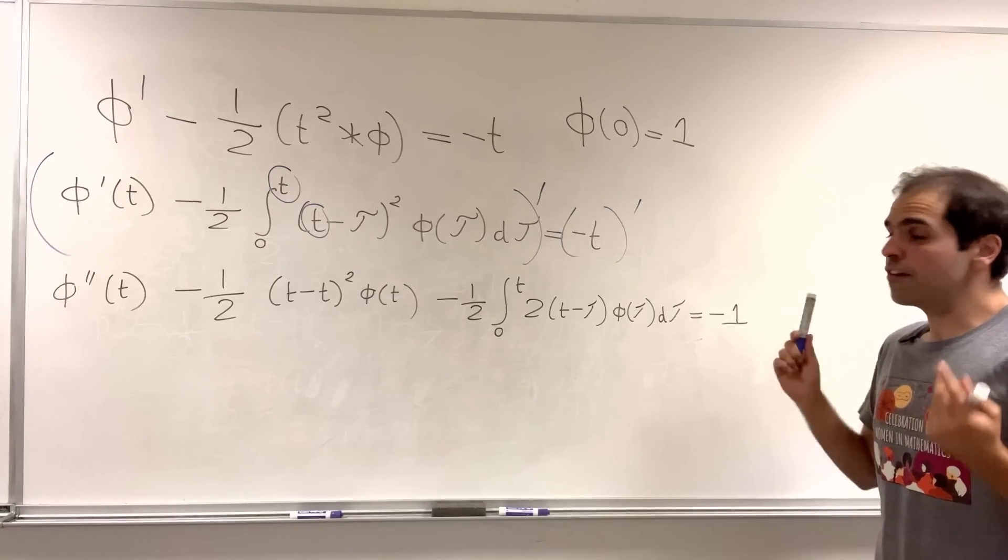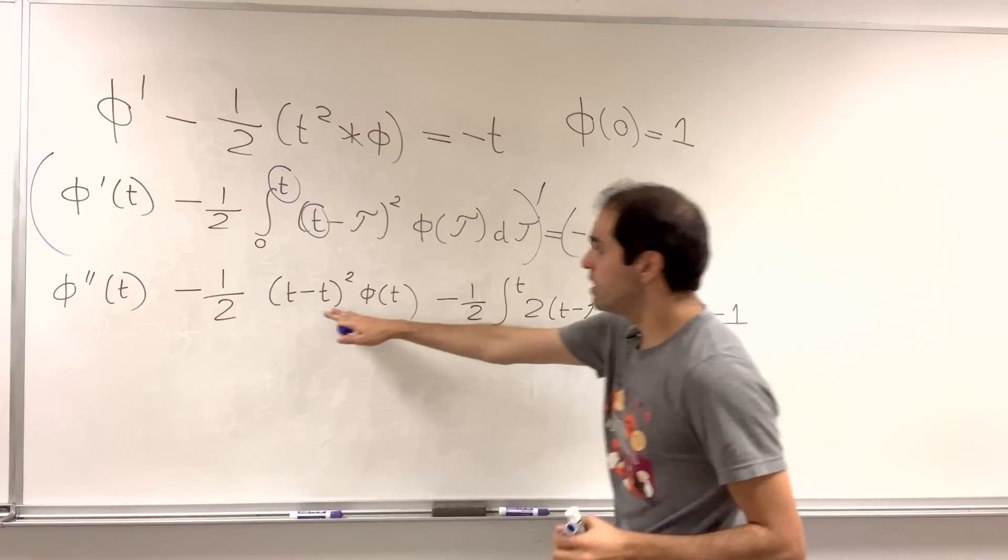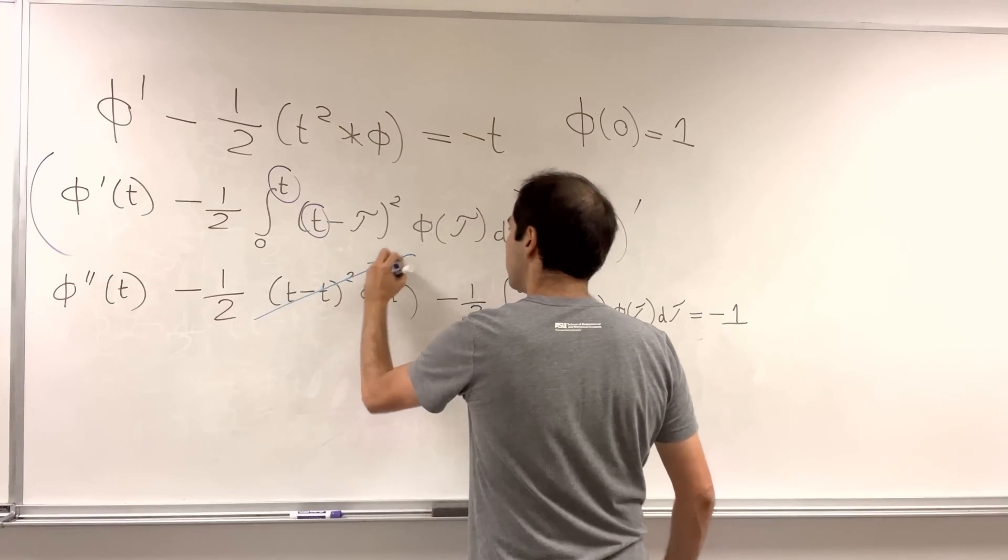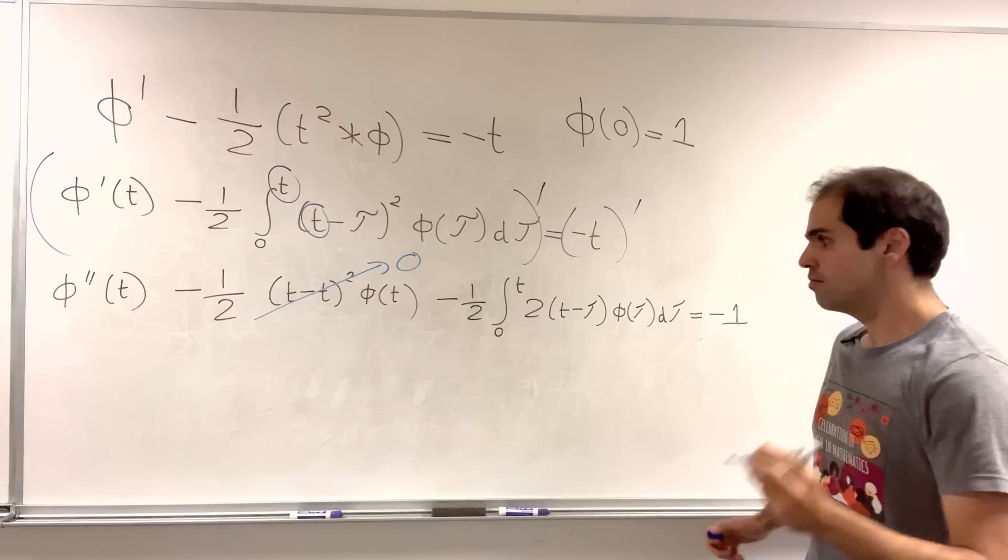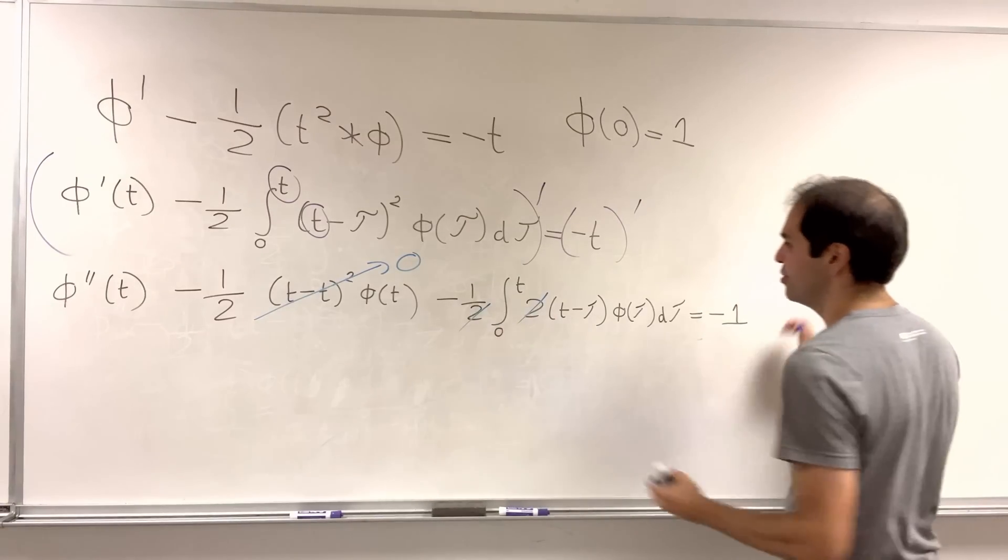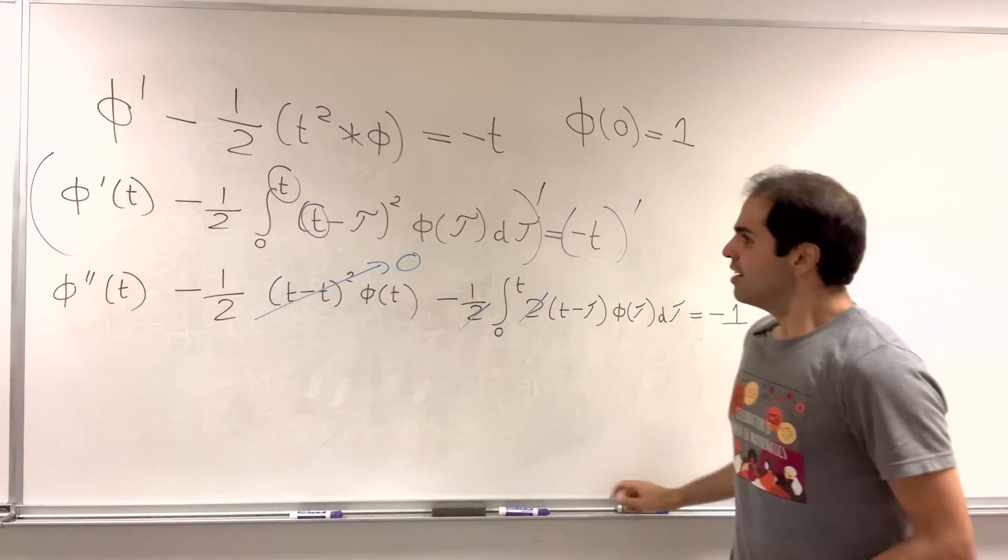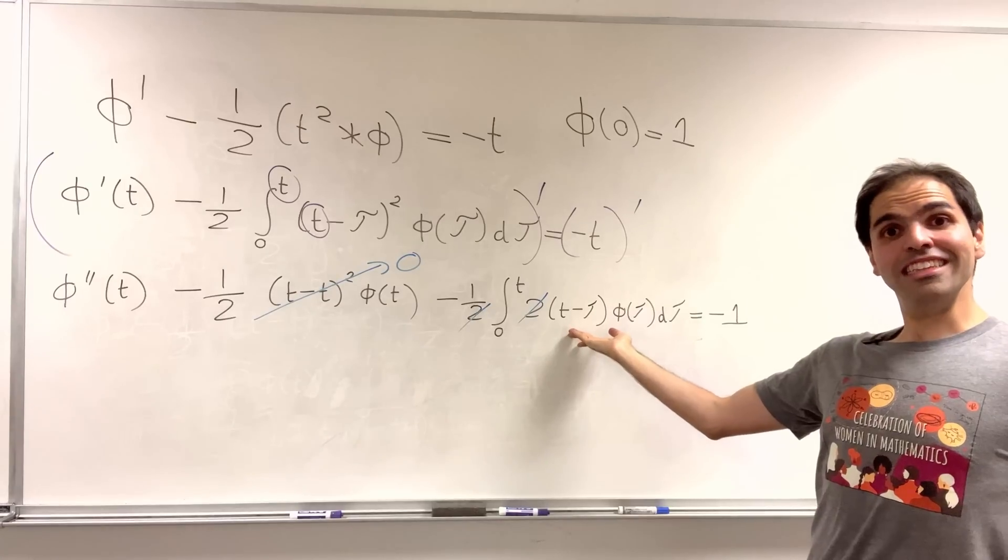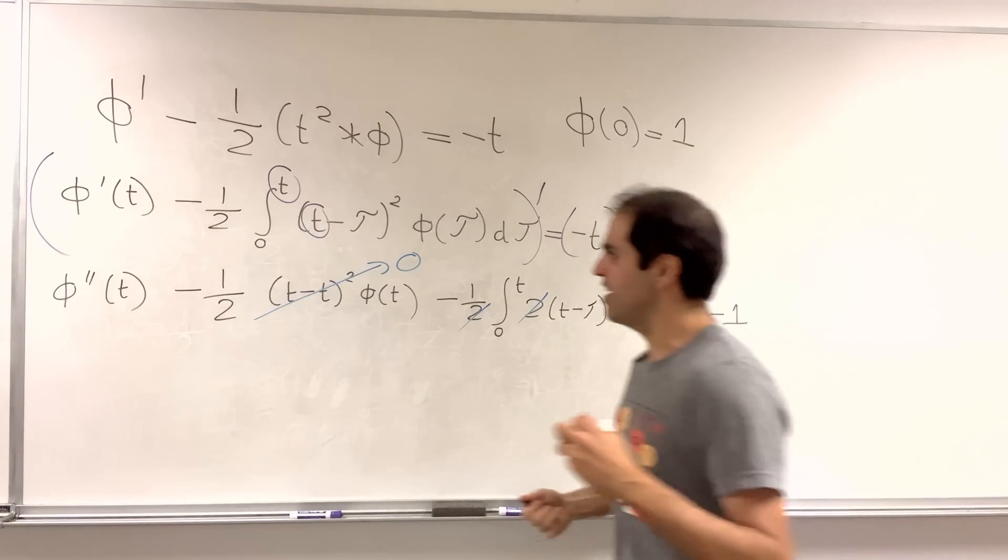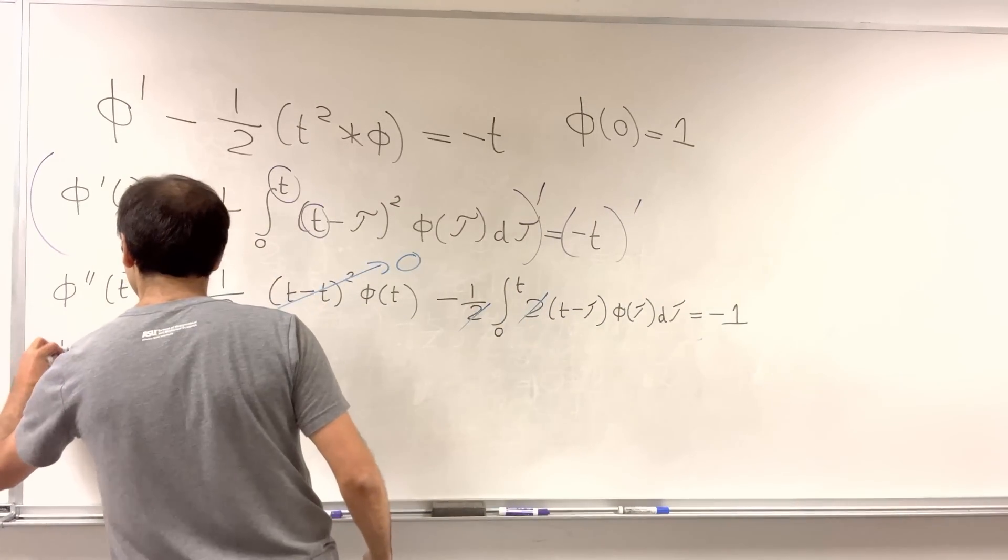Now, it looks scary, but the good news is, this term here just becomes zero. And not only that, two cancels out. And, well, the problem is, we still have an integral, so we need to differentiate this once more.